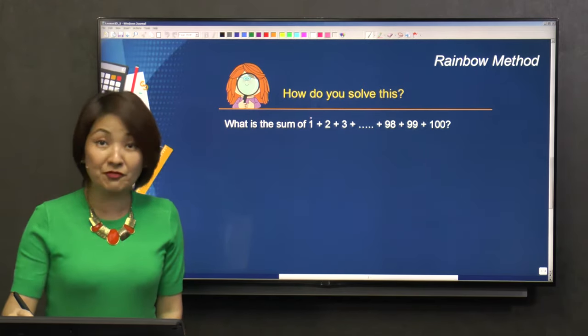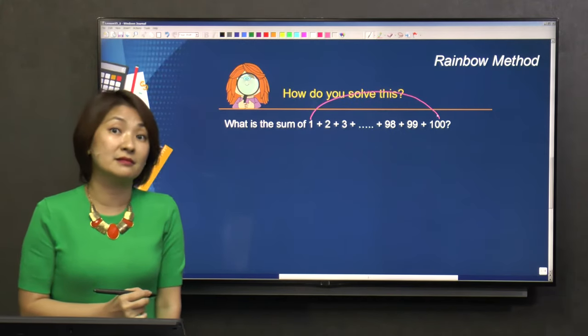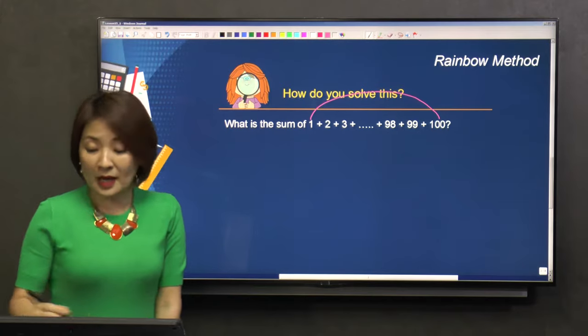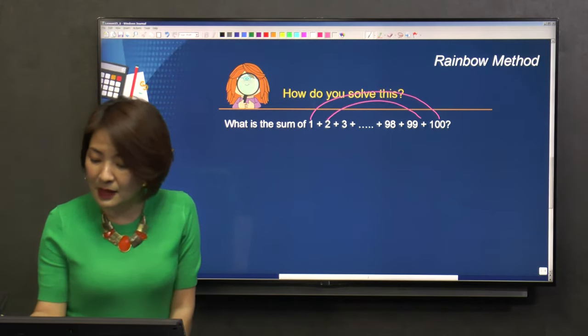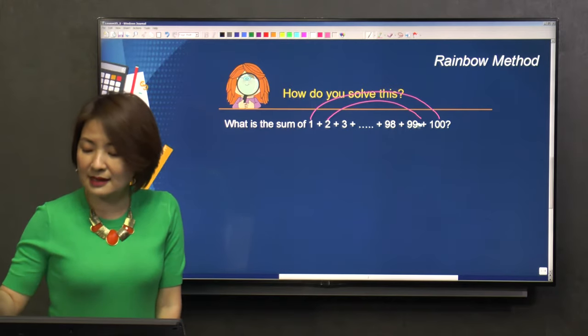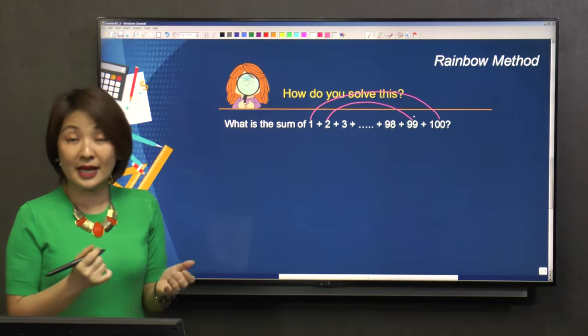If I take the first number and add it to the last number, what do I get? 101. If I take the second number and the second last number and add them together, what do I get? 101.